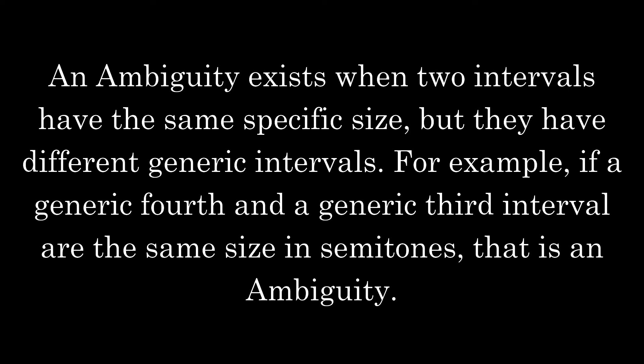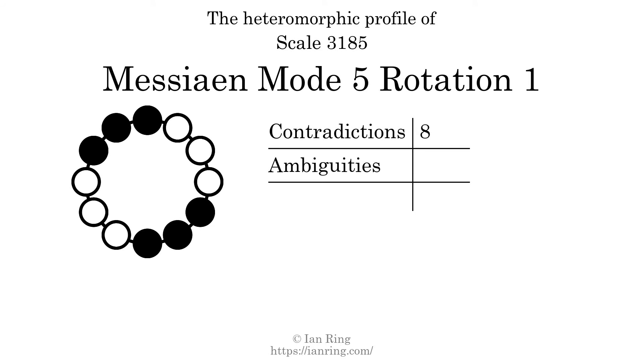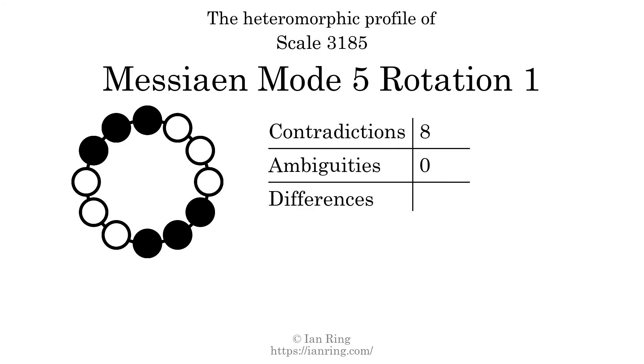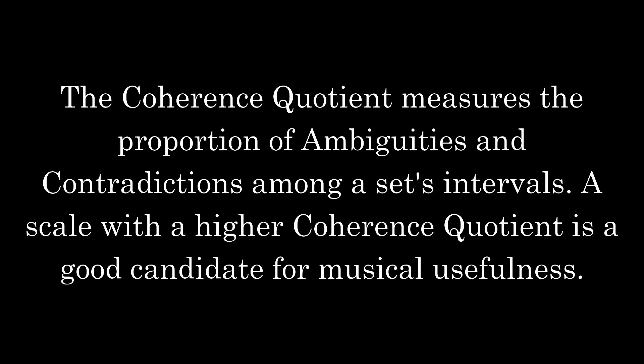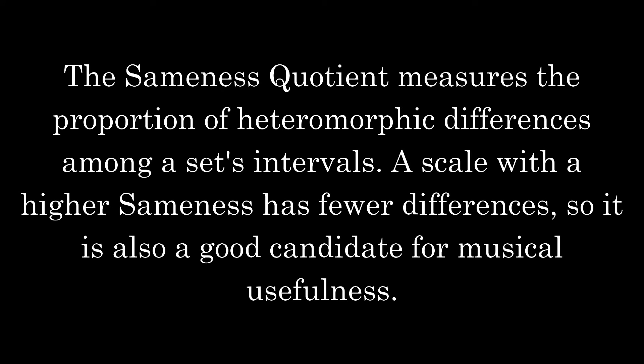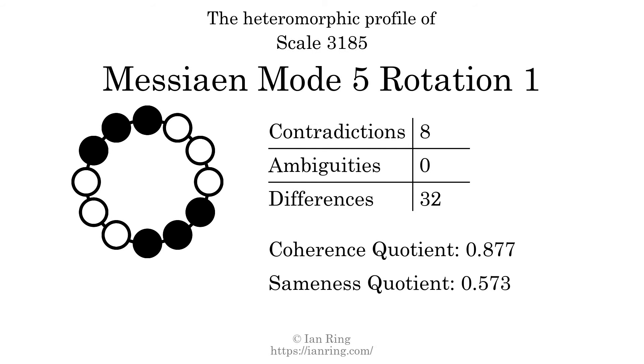An ambiguity exists when two intervals have the same specific size but they have different generic intervals. For example, if a generic fourth and a generic third interval are the same size in semitones, that is an ambiguity. The number of ambiguities in this scale is zero. A difference exists when two intervals have the same generic size but different specific sizes. For example, a major third and a minor third both have the same generic size but different sizes in semitones. The number of differences in this scale is 32. The coherence quotient measures the proportion of ambiguities and contradictions among a set's intervals; a scale with a higher coherence quotient is a good candidate for musical usefulness. The coherence quotient is 0.877. The sameness quotient measures the proportion of heteromorphic differences among a set's intervals; a scale with a higher sameness has fewer differences, so it is also a good candidate for musical usefulness. The sameness quotient is 0.573.